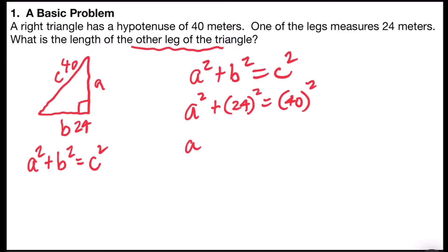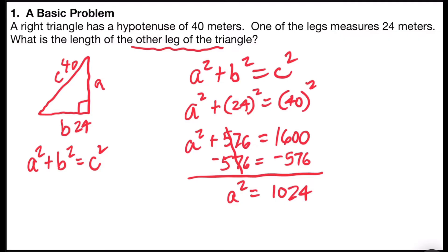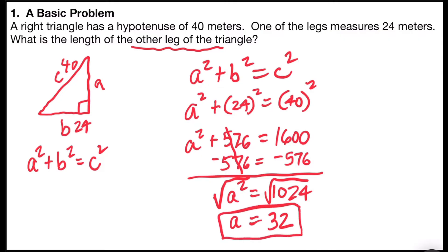On the left side of the equation I have A squared plus 24 times 24, which is 576. On the right side, 40 squared is 1600. Now I subtract 576 from both sides to get A squared by itself — 576 minus 576 cancels out, leaving A squared equals 1024. Taking the square root on both sides, the square root of A squared is A, and the square root of 1024 is 32. So the length of the other leg is 32 meters.